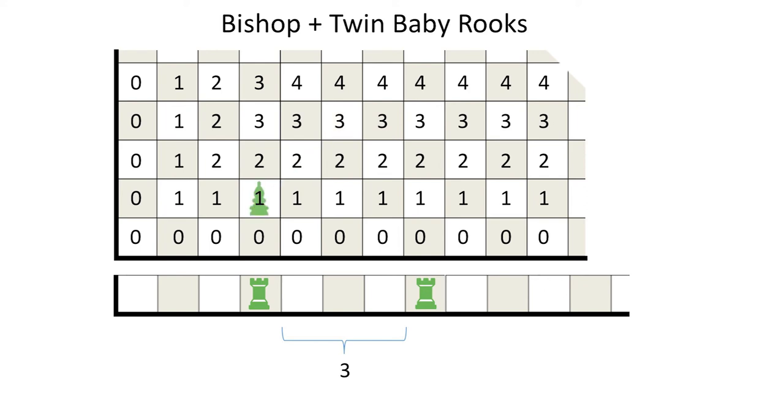If red then plays the bishop from three to one, blue can respond by playing the baby rooks number to also become one. If red increases the twins' Grundy number, then blue can again reverse it back to one.